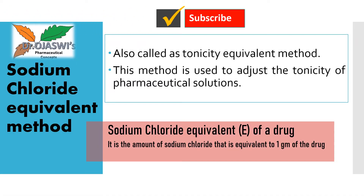The sodium chloride equivalent method is also called the tonicity equivalent method. This method is used to adjust the tonicity of pharmaceutical solutions. The sodium chloride equivalent of any particular drug is the amount of sodium chloride that is equivalent to 1 gram of that particular drug.